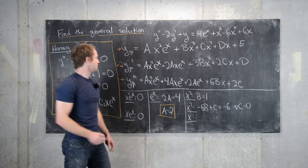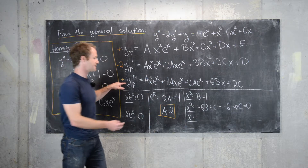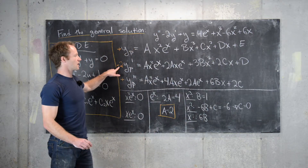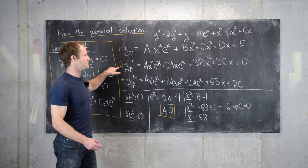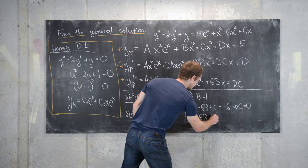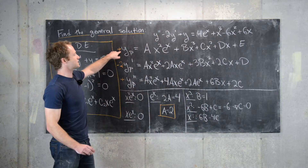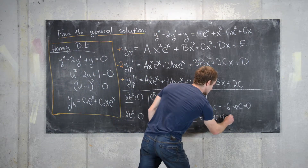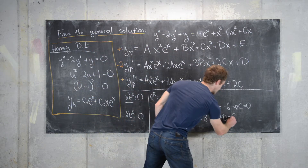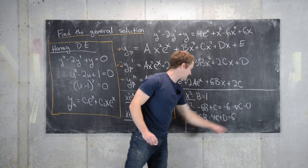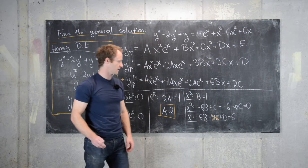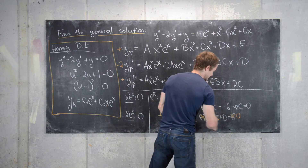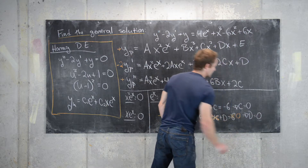For the x coefficients: from the second derivative we have 6b; from the first derivative we have 2c, but with the factor of -2 that becomes -4c; plus d from the zeroth derivative. So 6b - 4c + d = 6. Using c = 0 and b = 1, this simplifies to 6 + d = 6, so d = 0.